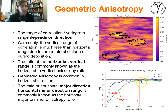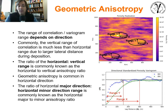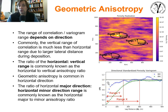As we calculate variograms, we consistently see this behavior: when calculating in two primary orthogonal directions, the range is greater in one and less in the other. The direction with the greatest spatial continuity — the greater range — is called the major. The one with the lesser range is the minor. They must be orthogonal to each other, 90 degrees separated. That's how we parameterize geometric anisotropy.